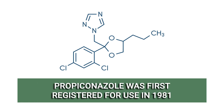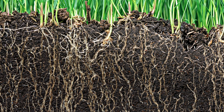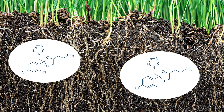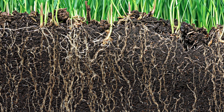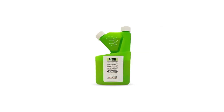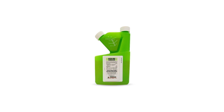Propiconazole, first registered by the US EPA in 1981, is a triazole fungicide used to control lawn diseases and fungi. This product is systemic, so it will be absorbed into treated plants to prevent disease as well as treat ongoing infections.